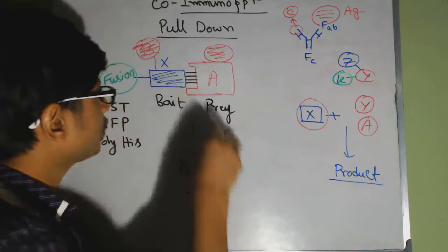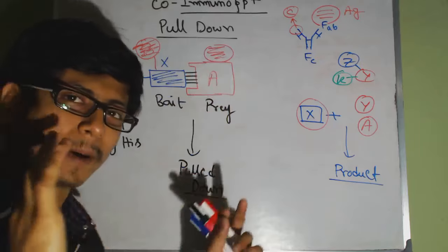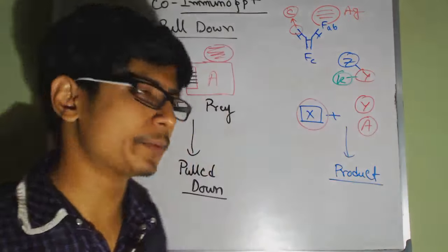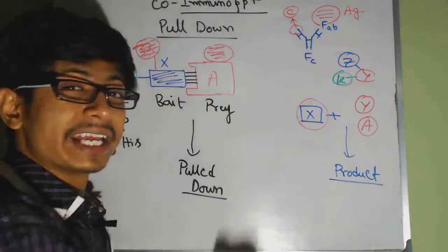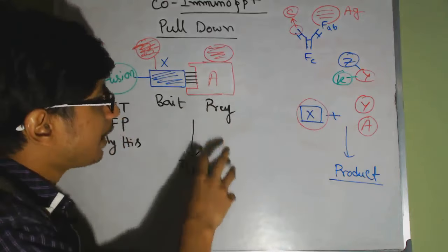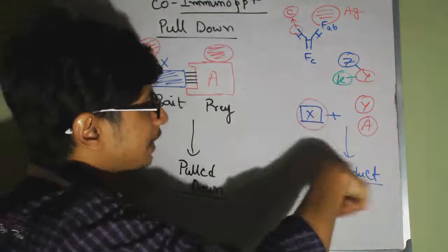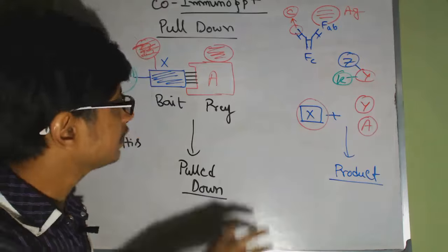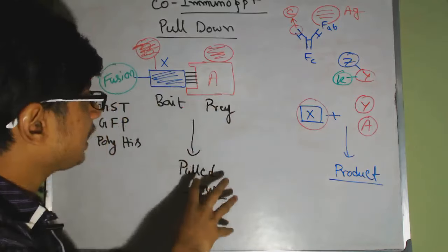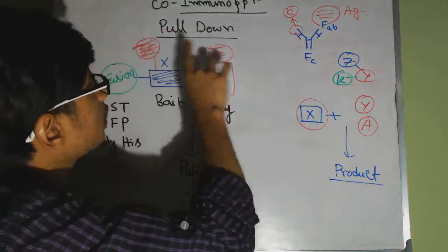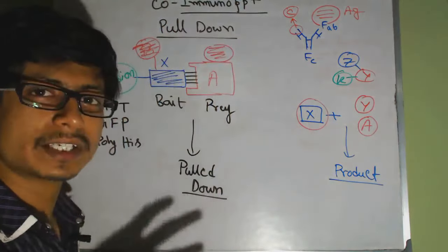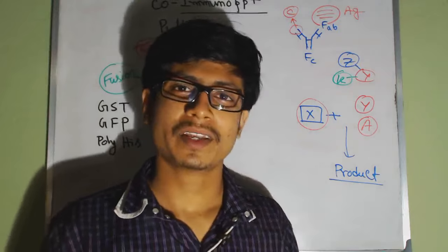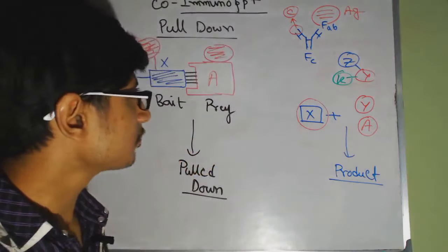We load the precipitated proteins onto an SDS-PAGE gel and check molecular weight. Since we know the molecular weight of X, if X is bound with A the apparent molecular weight will be higher. From this we can determine whether it is A or Y that interacted with X. This is the pull-down method — a bait-prey system used alongside co-immunoprecipitation to confirm protein-protein interactions by pulling the interacting protein unit down.